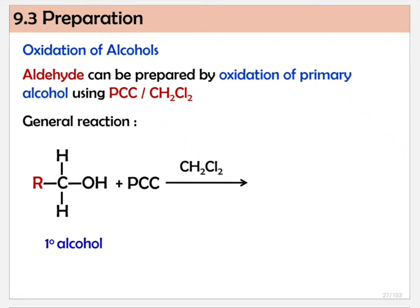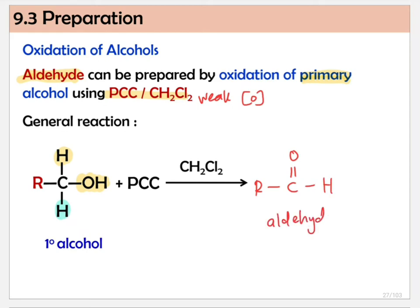Next is oxidation of alcohol. For this, we need to look at the class of alcohol. If we want to produce an aldehyde, we can only get it from the oxidation of a primary alcohol, and you must use PCC in CH2Cl2 — a weak oxidizing agent. What happens is the primary alcohol undergoes oxidation: the hydrogen together with the OH is oxidized to give C=O. Since it is a weak oxidizing agent, the remaining hydrogen stays as hydrogen, so you get an aldehyde. Remember: for aldehyde, it must be primary alcohol using a weak oxidizing agent.